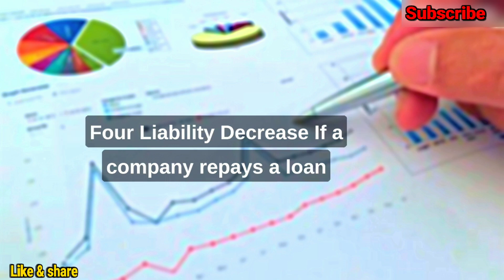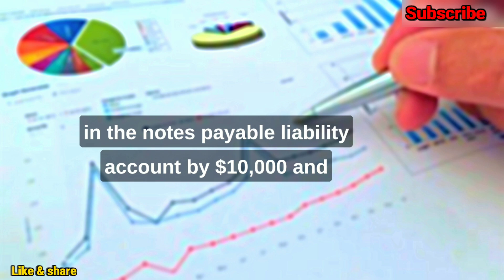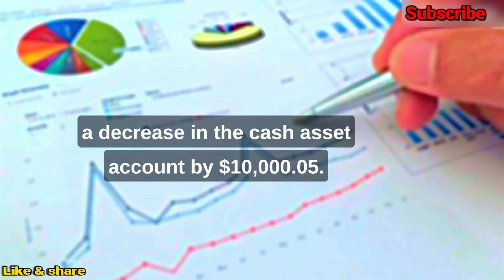Liability Decrease: If a company repays a loan of $10,000, the balance sheet will reflect a decrease in the notes payable liability account by $10,000 and a decrease in the cash asset account by $10,000.